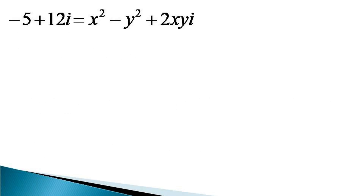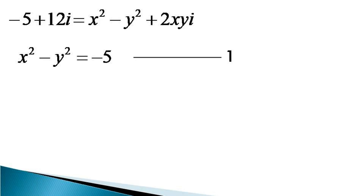Now in this equation, we compare the real part and the imaginary part separately. The real part on the right hand side is x squared minus y squared, and on the left hand side is minus 5. So x squared minus y squared becomes equal to minus 5. This is our first equation.